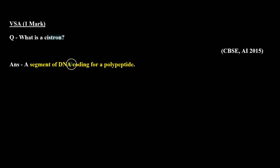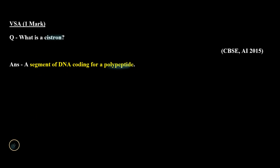The question is: what is a cistron? A cistron is the segment of DNA which codes for a polypeptide or protein. So the answer is a segment of DNA coding for a polypeptide. I hope this question is clear to you. Thank you.